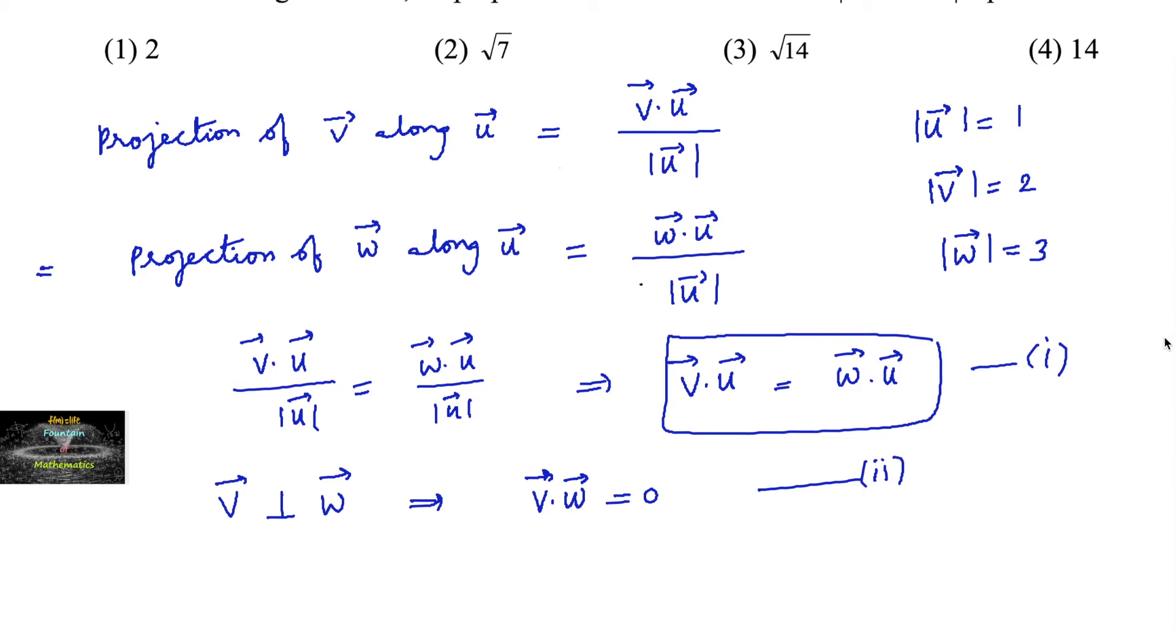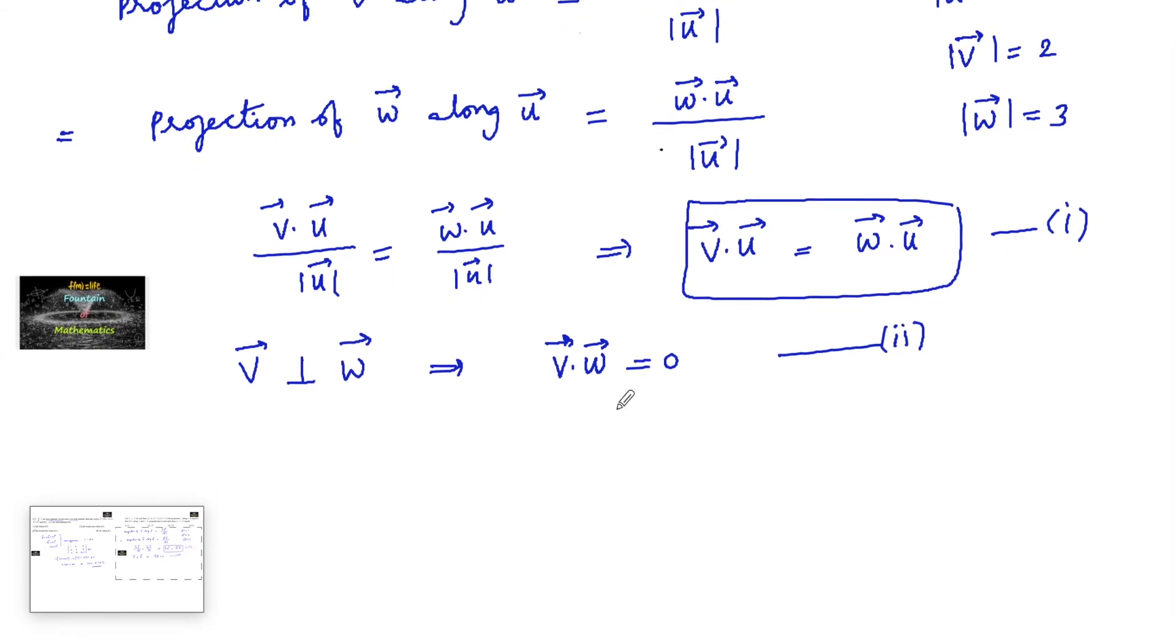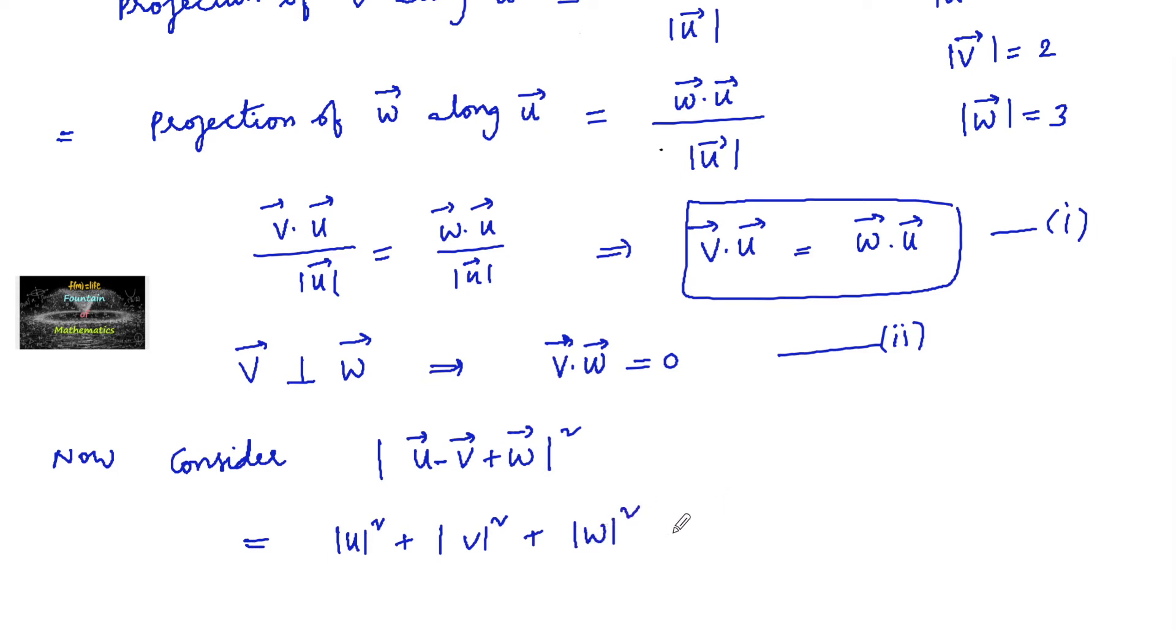Then we need to find mod of u minus v plus w. So now consider mod u minus v plus w square, which equals mod u square plus mod v square plus mod w square minus 2 times u dot v minus 2 times v dot w plus 2 times u dot w.